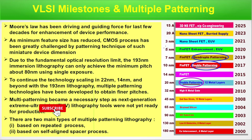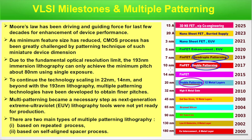This is the diagram we are taking as reference for the last few episodes. Here we can see at 20 nanometer timeline 2013, double patterning. Then at 10 nanometer FinFET double patterning in 2017, and 7 nanometer FinFET quadruple patterning at 2019. These are the timelines and technology nodes where multiple patterning is used.